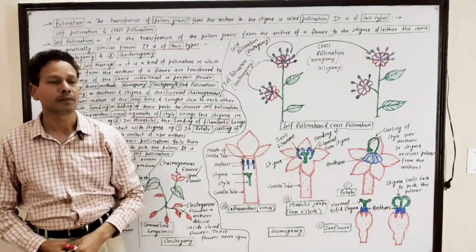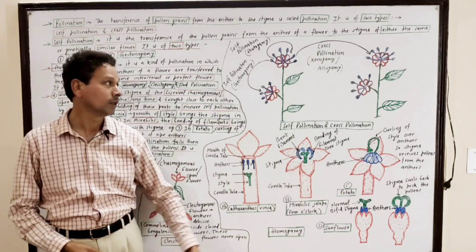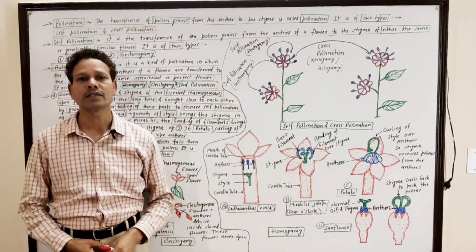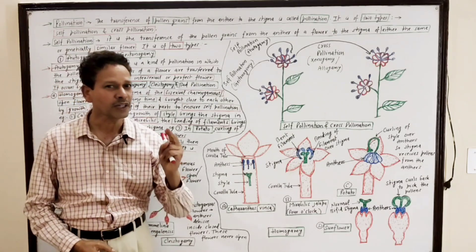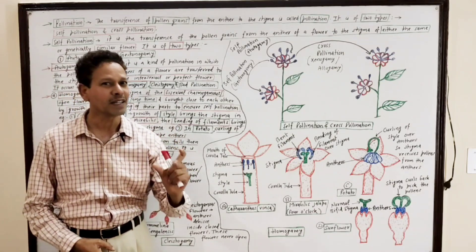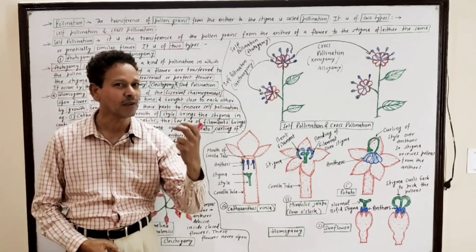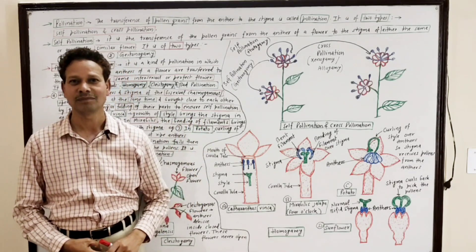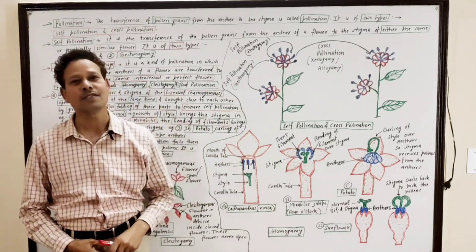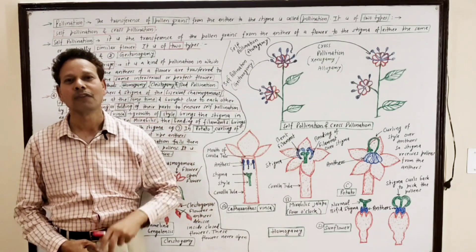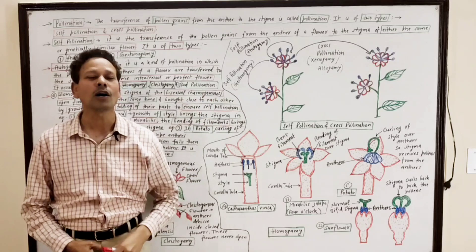Students, please note that these notes have been uploaded in the description of the video — please download your notes. In this lecture on reproduction in angiosperms, today I will discuss pollination. Pollination is the transference of pollen grains (microspores) from the anther to the stigma of a flower.